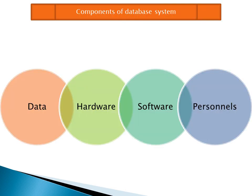Now we will discuss the four components of a database system. These components are data, hardware, software, and personnel.